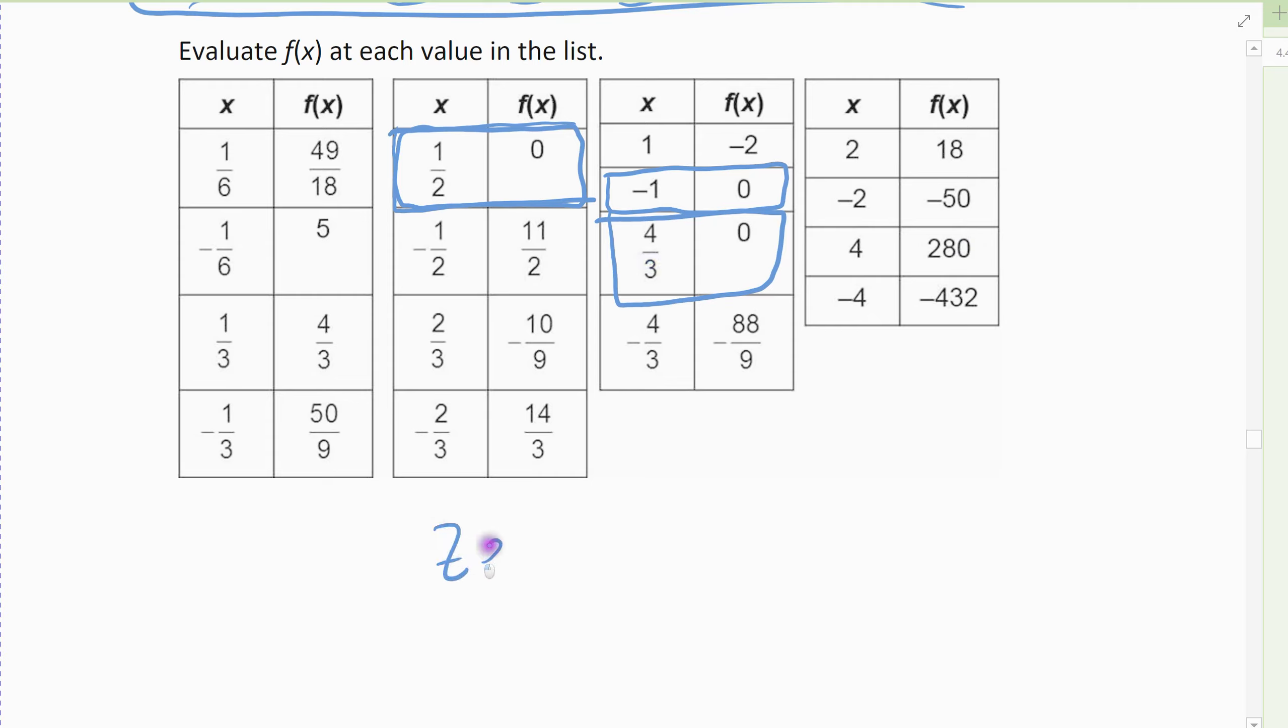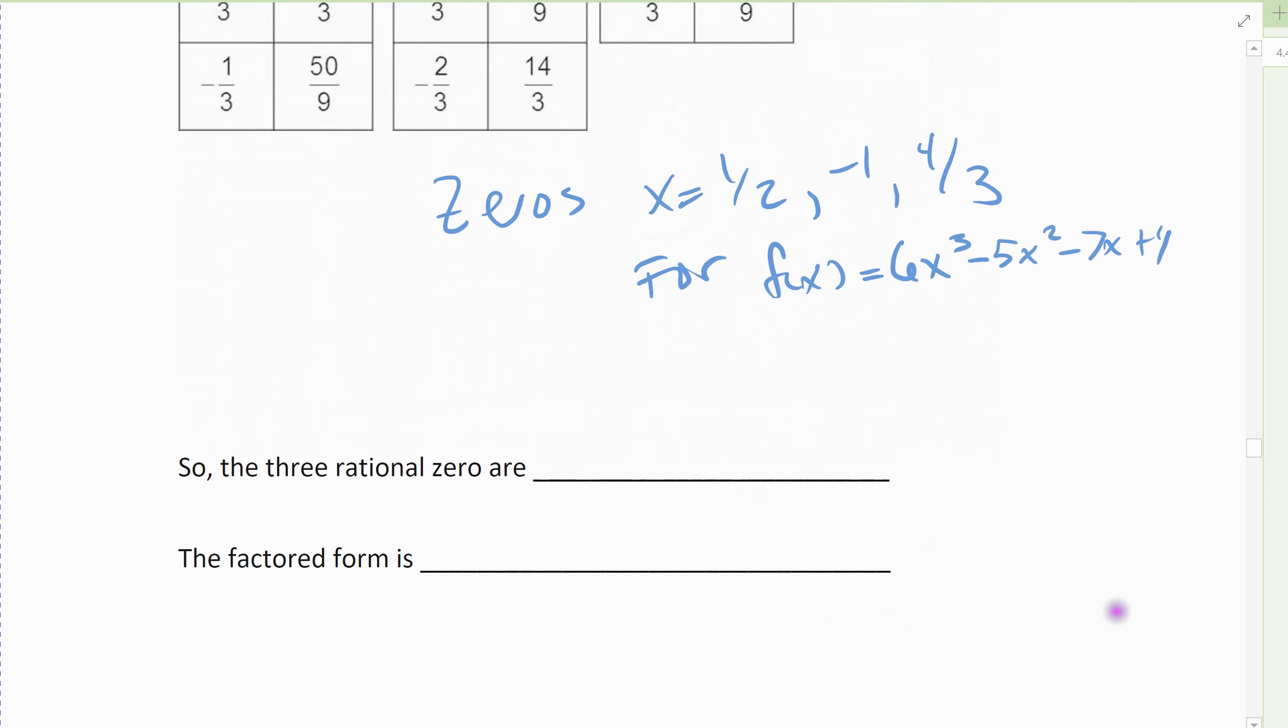And so my zeros are 1/2, negative 1, and 4/3 for the function f(x), which was 6x³ - 5x² - 7x + 4. So my three rational zeros are 1/2, negative 1, and 4/3.